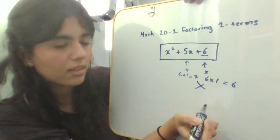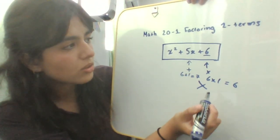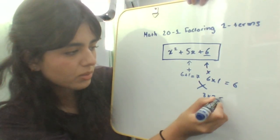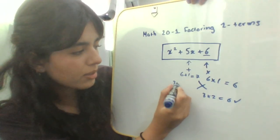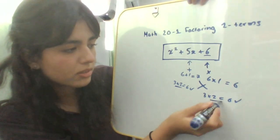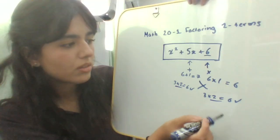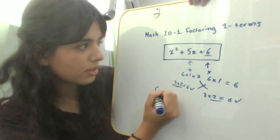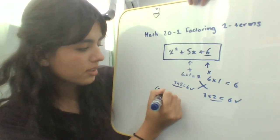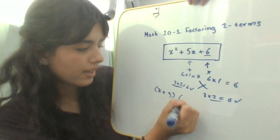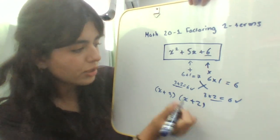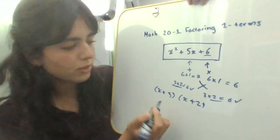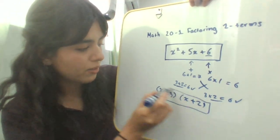How about we try 3 times 2? 3 times 2 equals 6—that's correct. And then 3 plus 2 equals 5—that also equals 5. Your correct numbers would be 3 and 2, and you can just directly put it into the brackets: (x + 3)(x + 2). Make sure you pay attention to the sign. If it's negative, you'll put negative in the bracket, but if your number is positive, you'll put positive in the bracket. This is your final factored form.